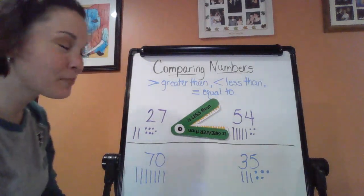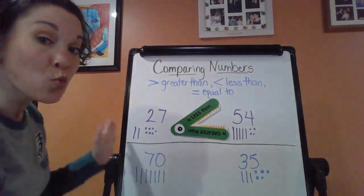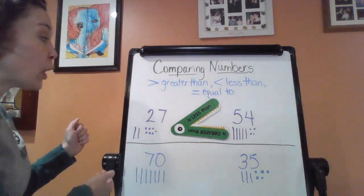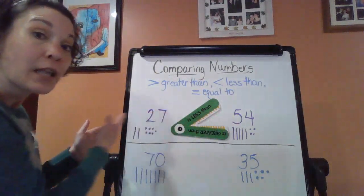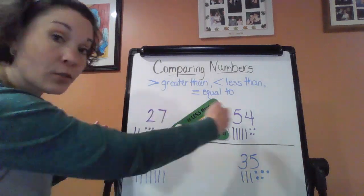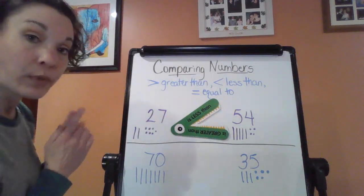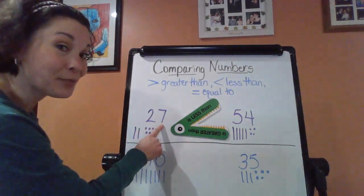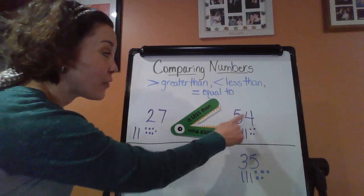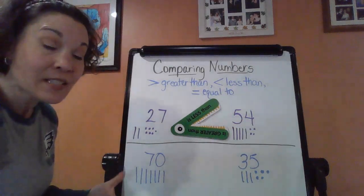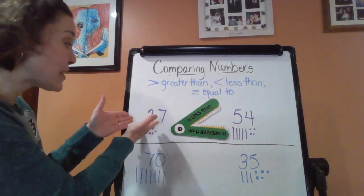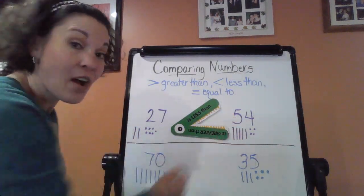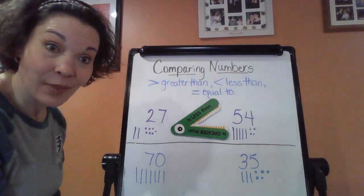54. So now we could read this. But you have to read it like you would left to right, like you were reading a sentence. Left to right. So listen how I read it. 27 is less than 54. Which makes sense. Because 27 is less. 2 tens is less than 5 tens. Okay?